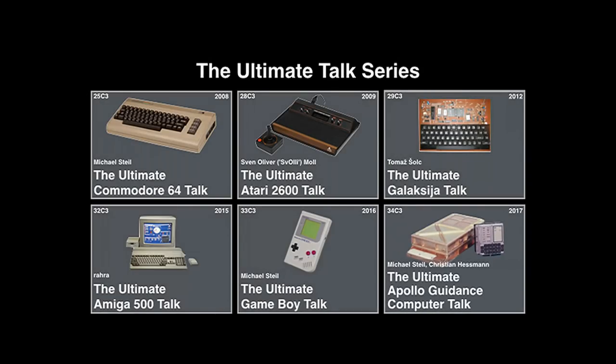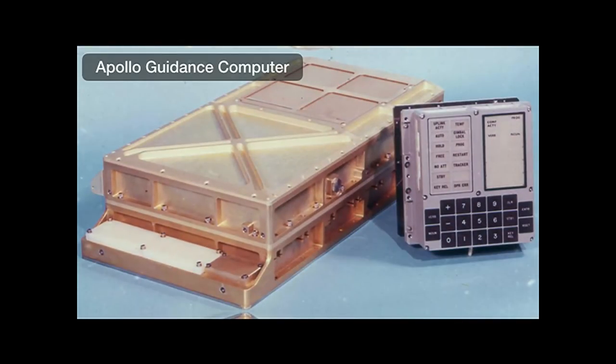This talk is number six in a series by various people. The idea is to explain as much as possible about a classic computer system in 60 minutes. The Apollo guidance computer, AGC, is a digital computer designed from scratch specifically for use on board the Apollo spacecraft to support the Apollo moon landings between 1969 and 1972. Developed at MIT between 1961 and 1966, a total of 42 AGCs were built at a cost of about $200,000 each.